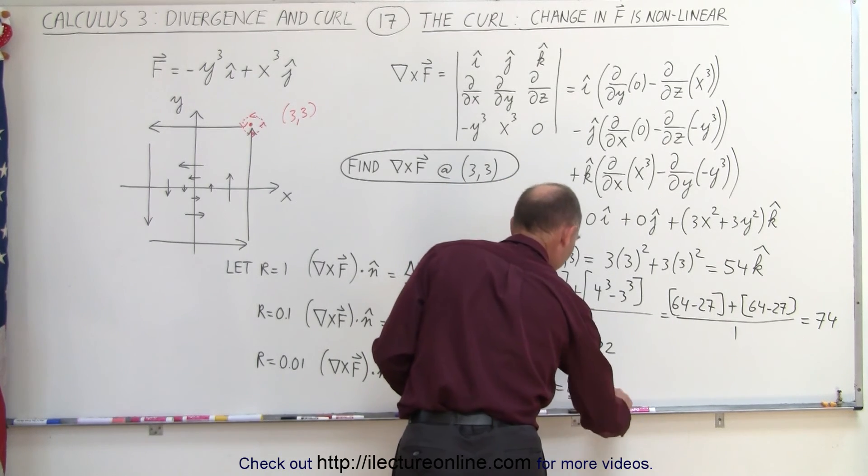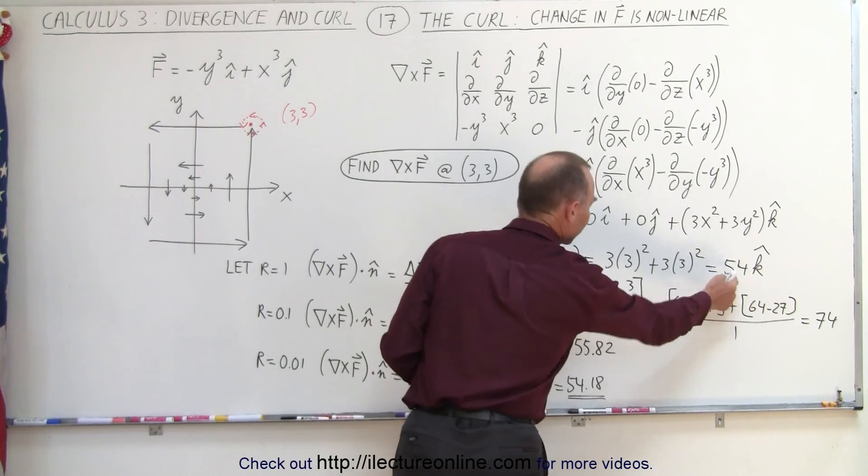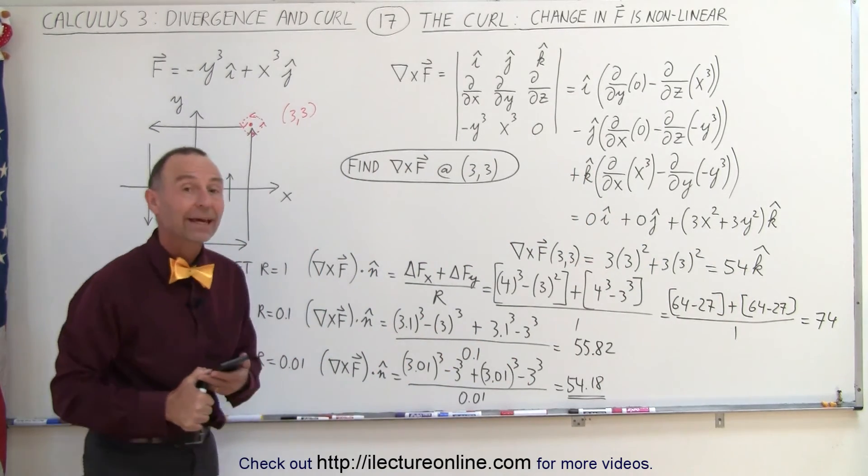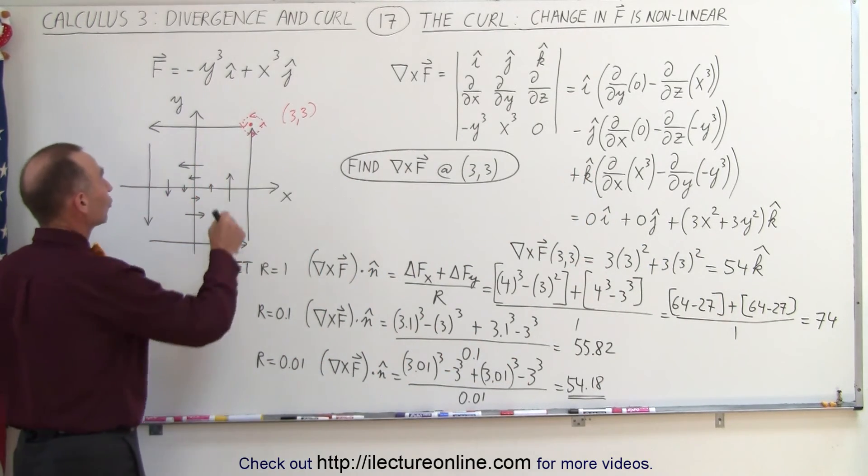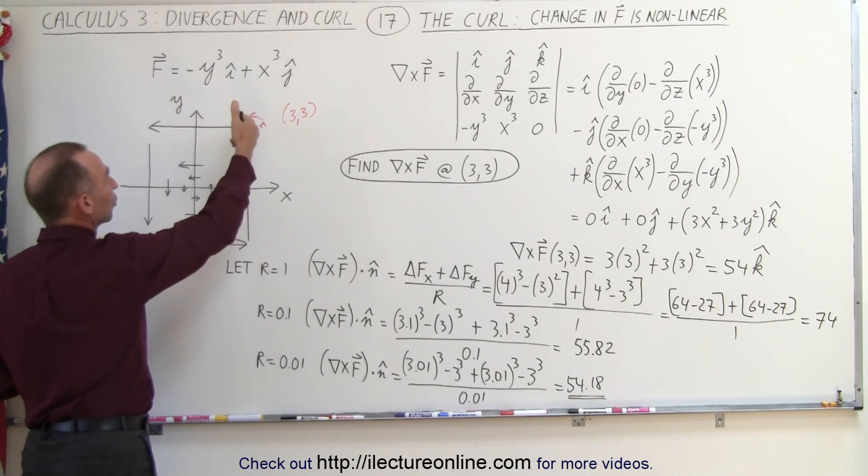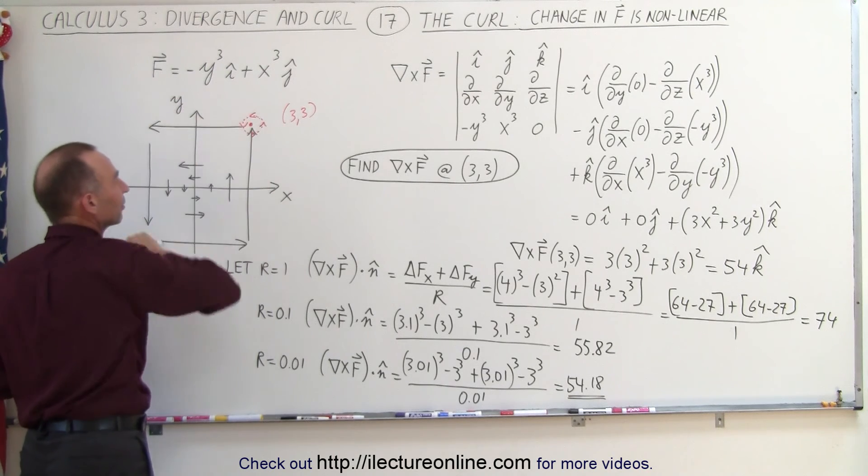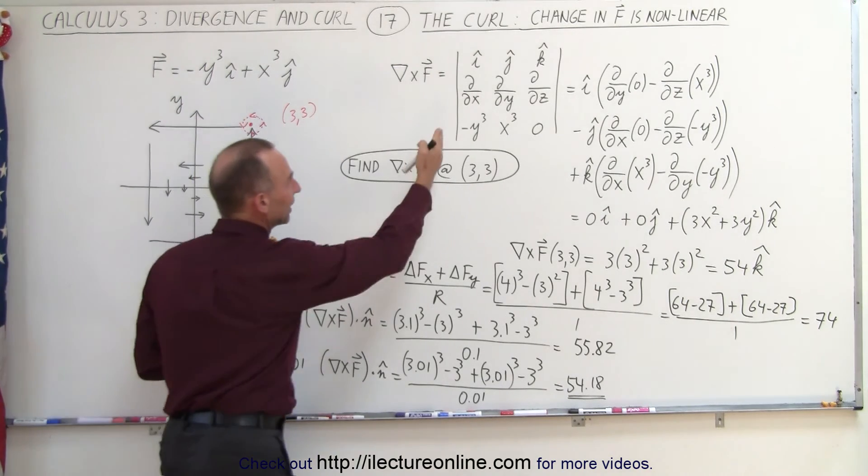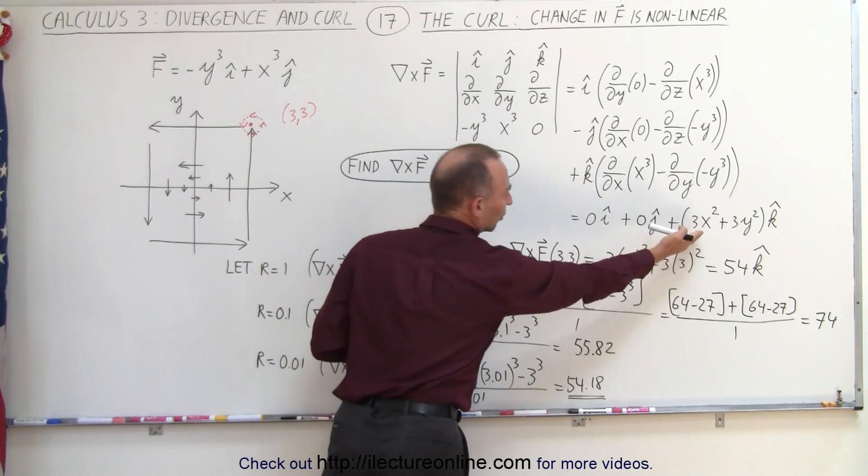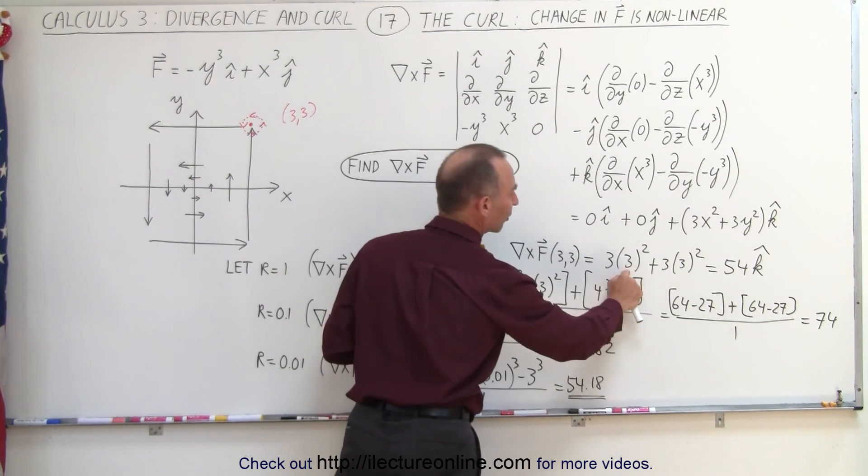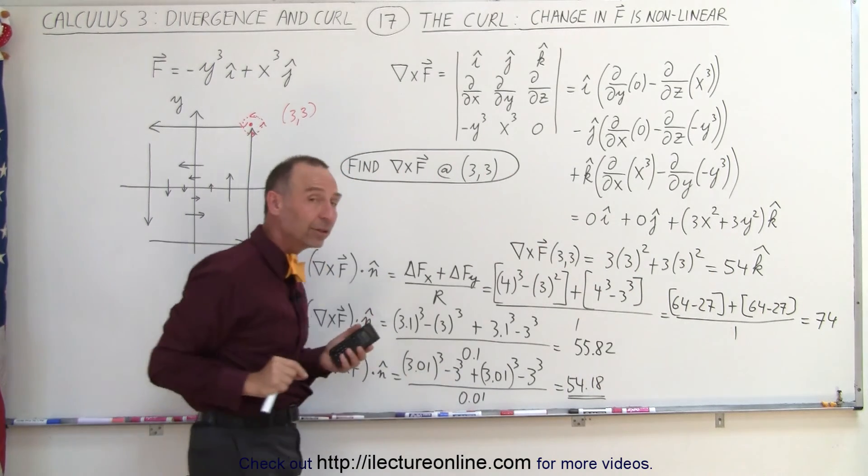which, of course, is very close to the value we're expecting. And so you can see again, when you try to find the circulation, which means the curl at any point inside your vector field, you can do it by simply calculating the curl of the vector field, which gives you an expression in terms of x and y, you plug in the values for x and y, you get the exact value.